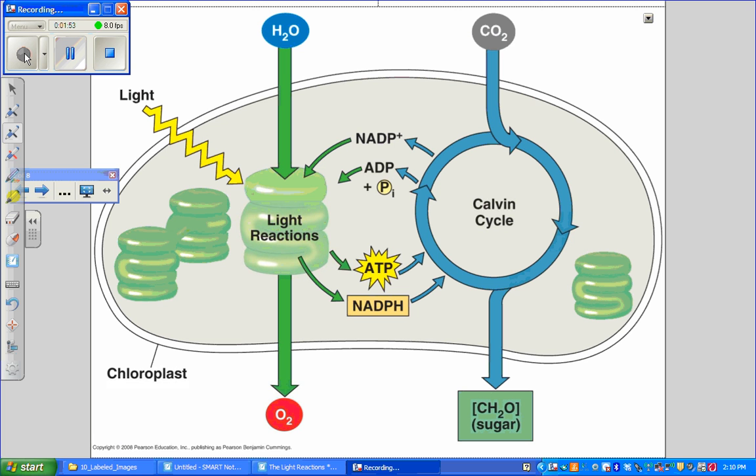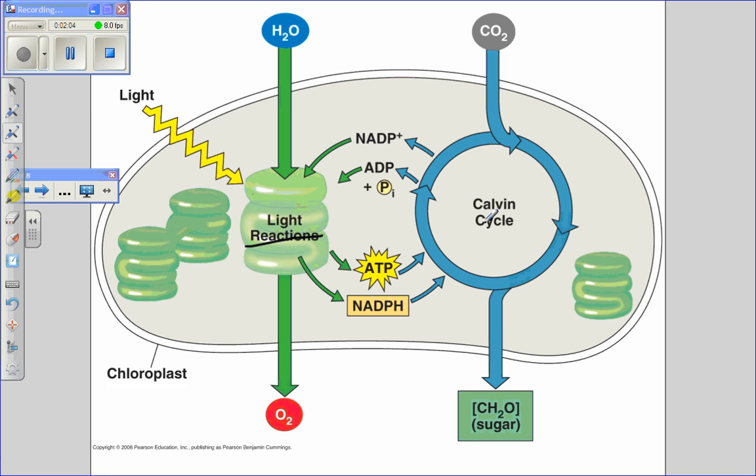The process of photosynthesis can be neatly divided into two sets of reactions: the light-dependent reactions and the Calvin cycle, or what's commonly known as the dark reactions. We won't use the term dark reactions, preferring instead to use the term Calvin cycle.